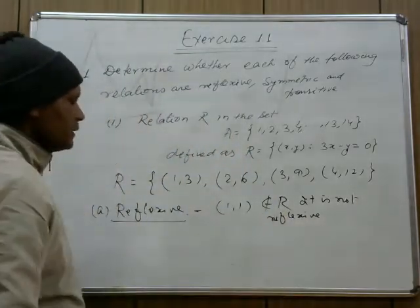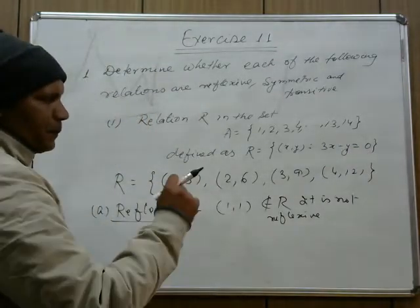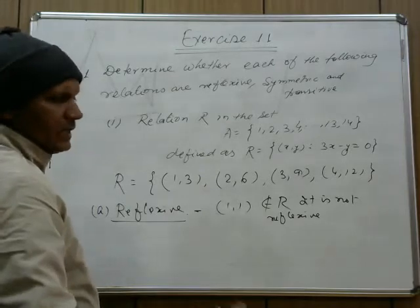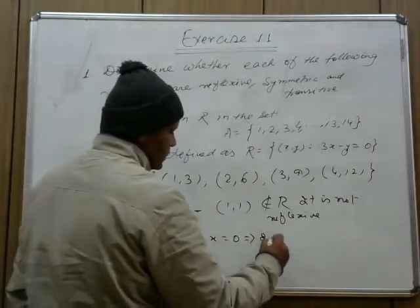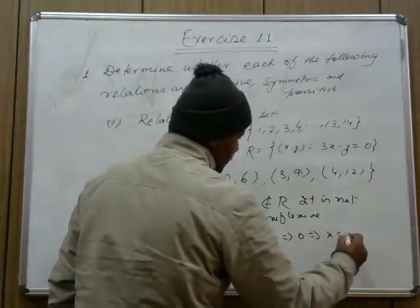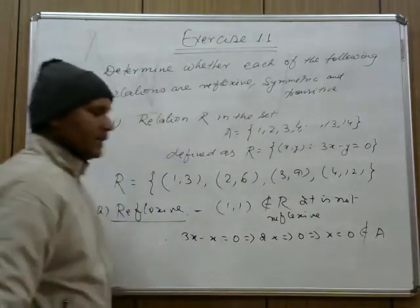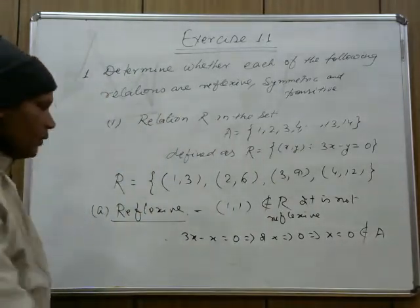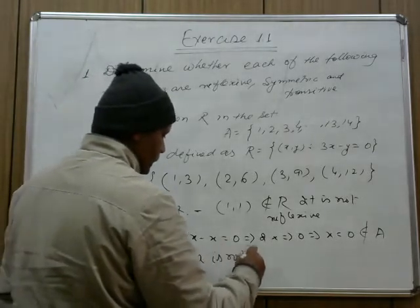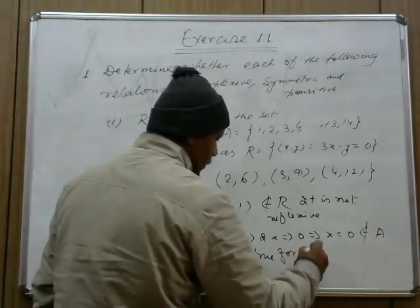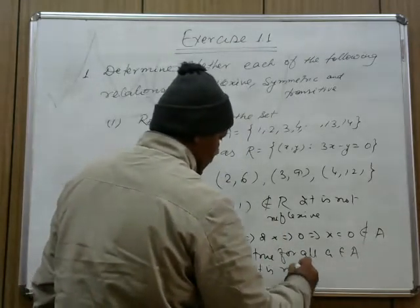A third way to write it: A related to A is not true for all A belonging to the given set A, and hence it is not reflexive. I have given three ways: first, a counterexample that (1,1) does not belong to R; second, substituting y = x gives x = 0 which is not in set A; third, stating the definition is violated for all elements.